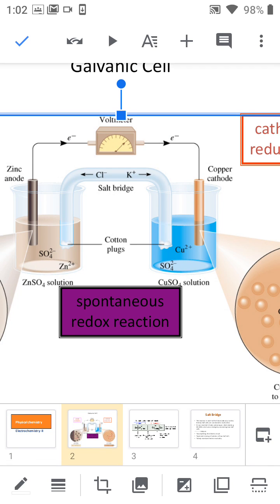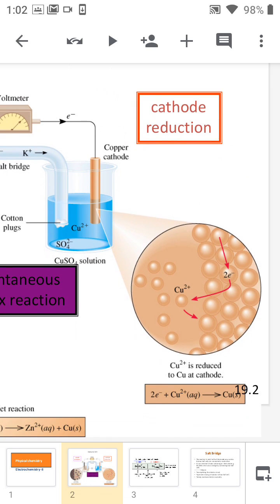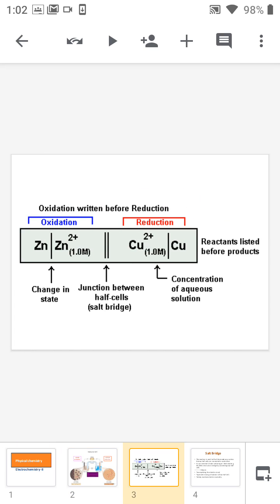Now, how will we represent this galvanic cell in terms of electrochemistry? So for that, I already mentioned that for every cell, there are two half cells.